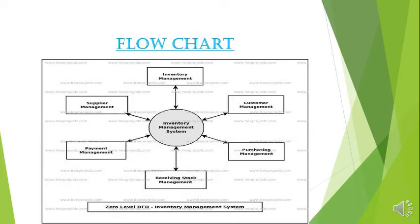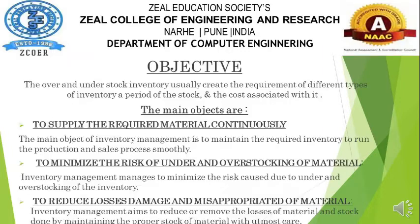The following flowchart depicts various uses of inventory management systems. Coming to the objectives: over and under stock inventory usually create the requirement for different types of inventory, stock periods, and associated costs. The main objectives are to supply the required material continuously, to minimize the risk of under and over stocking, and to reduce losses, damage and misappropriation of materials.